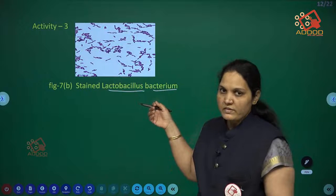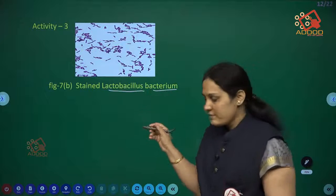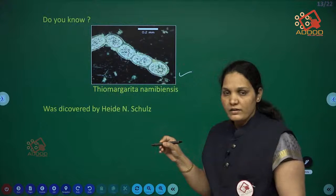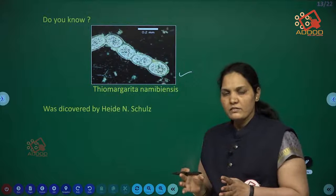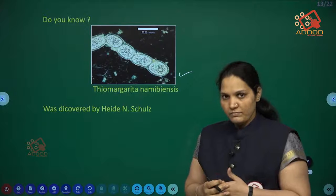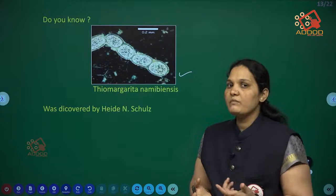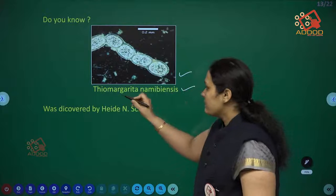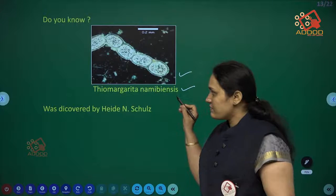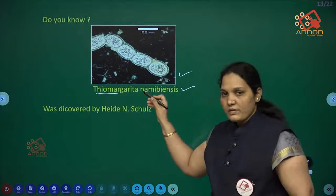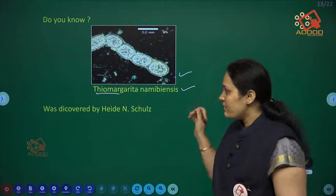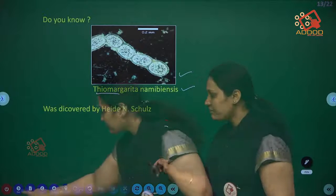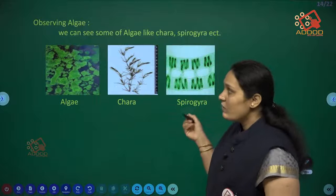Most bacteria cannot be seen without the naked eye, but there is one bacteria we can see with the naked eye: Thiomargarita namibiensis. This is the largest bacteria and was discovered by Heidi in skulls.